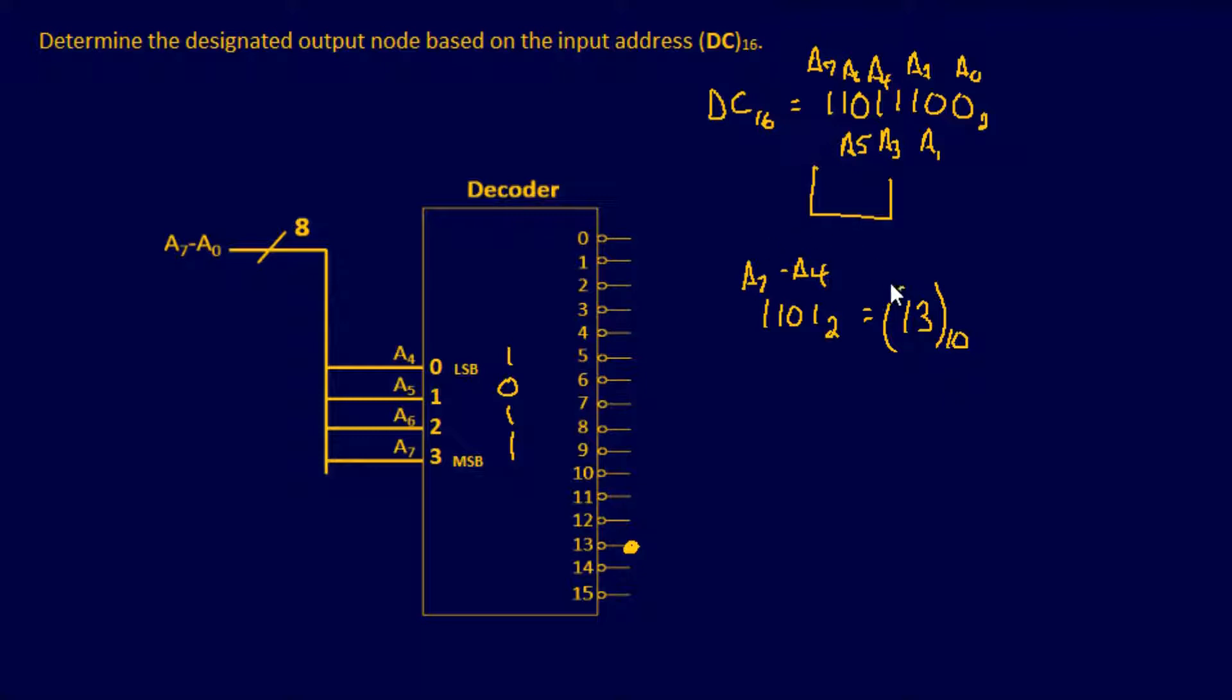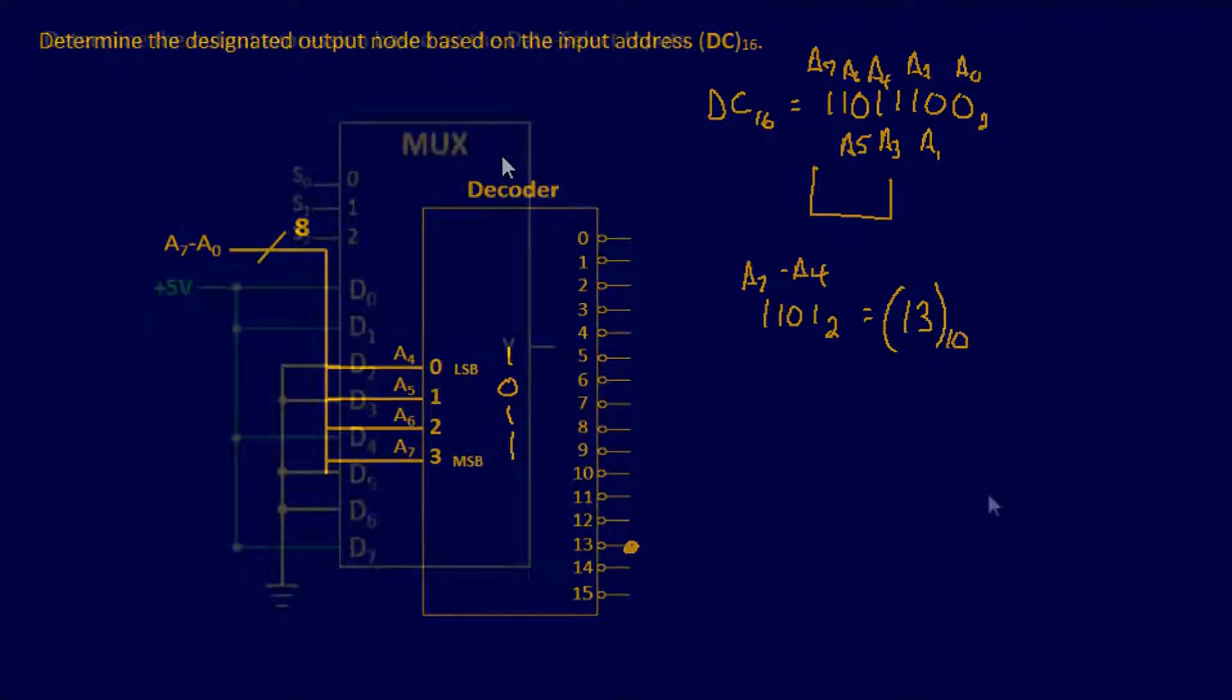So that's going to be your active node. So that's getting your feet wet as far as understanding a little bit of buses, the format it's going to be in, which is going to be hexadecimal, as well as get a little understanding of decoders. Let's do another example.